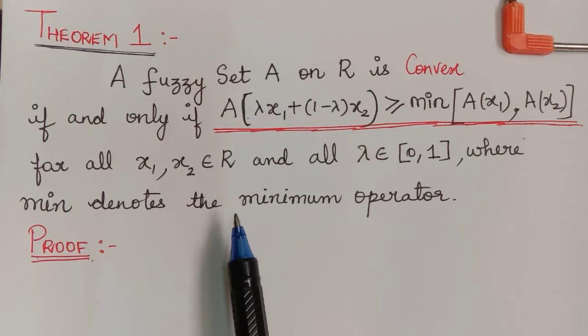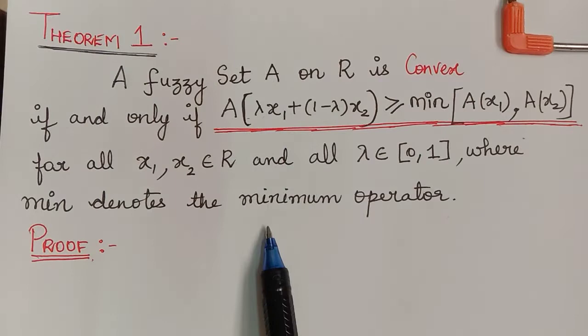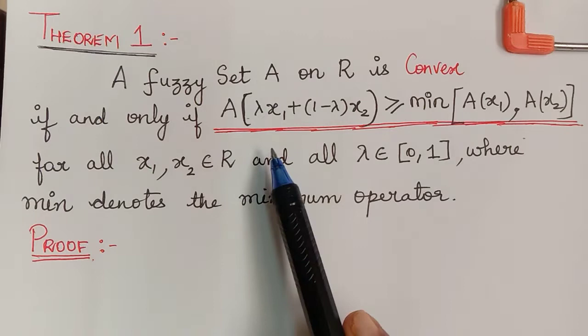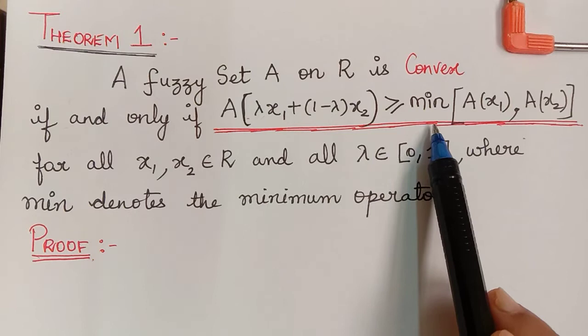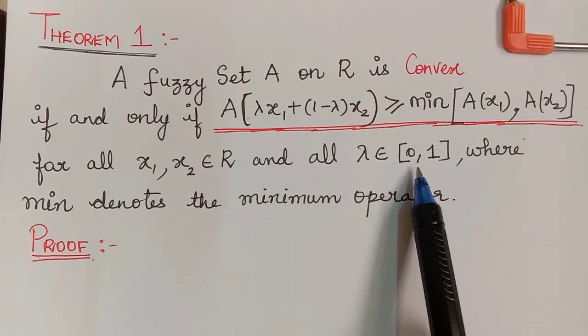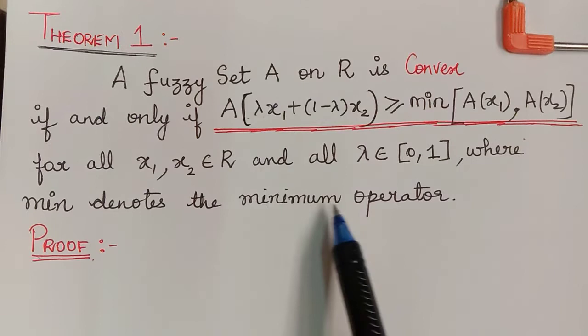Hello students, in this video let us learn the first theorem of this unit. This theorem is a very significant theorem from the examination point of view. The theorem says that a fuzzy set A on R is convex if and only if A of lambda x1 plus 1 minus lambda x2 is greater than or equal to minimum value of A of x1 comma A of x2, for all x1, x2 element of R and all lambda element of closed interval 0 comma 1, where min denotes the minimum operator.